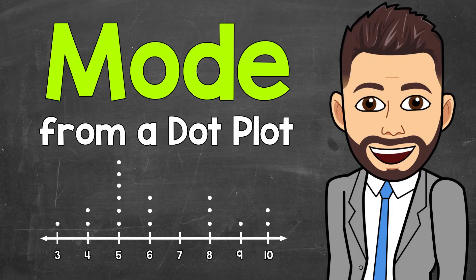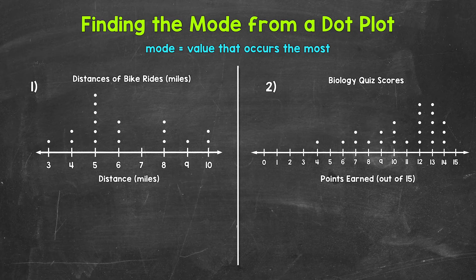Welcome to Math with Mr. J. In this video, I'm going to cover how to find the mode from a dot plot. Remember, the mode is the value that occurs the most within the dataset. When you think mode, think most.